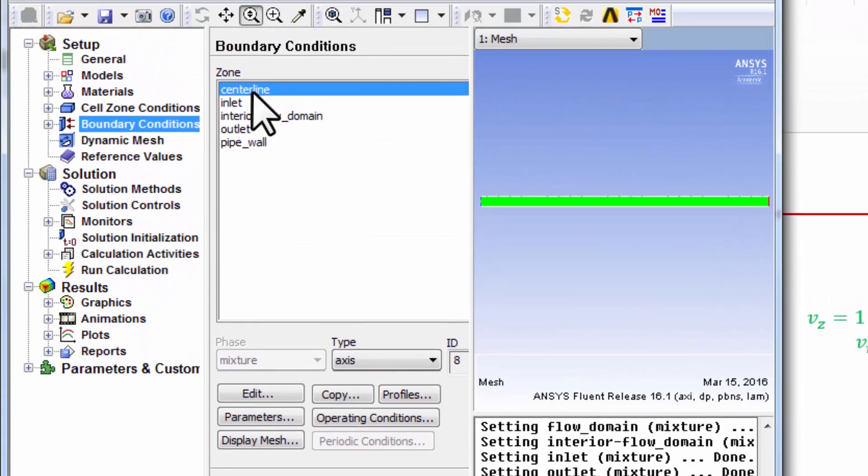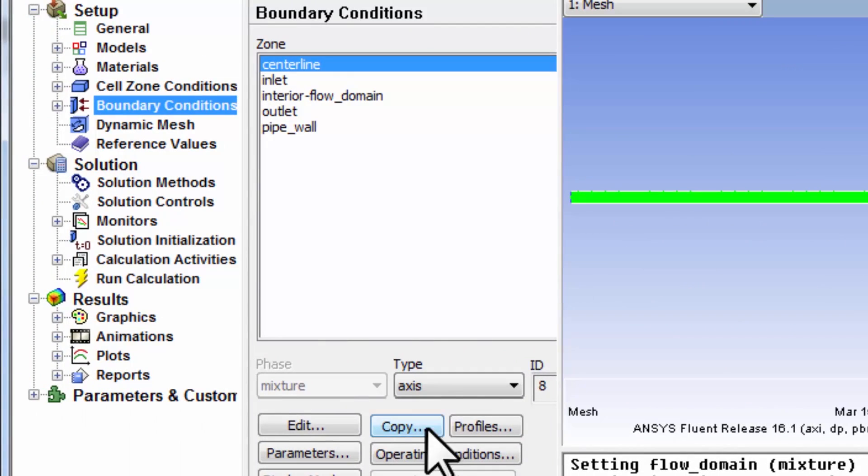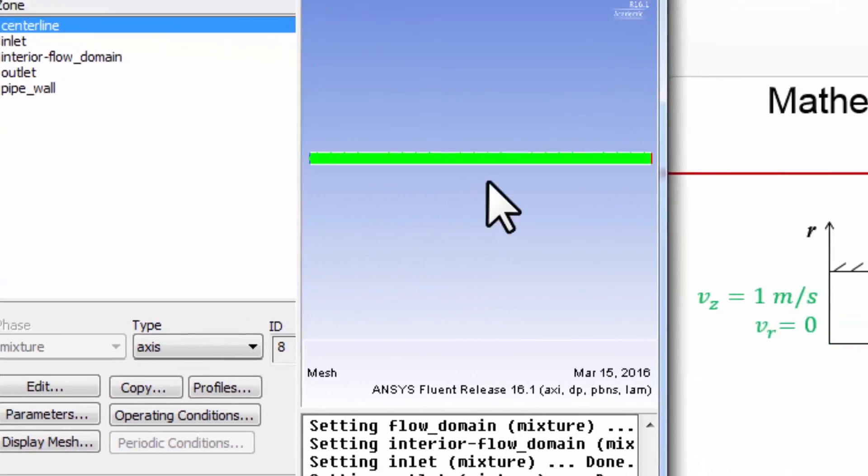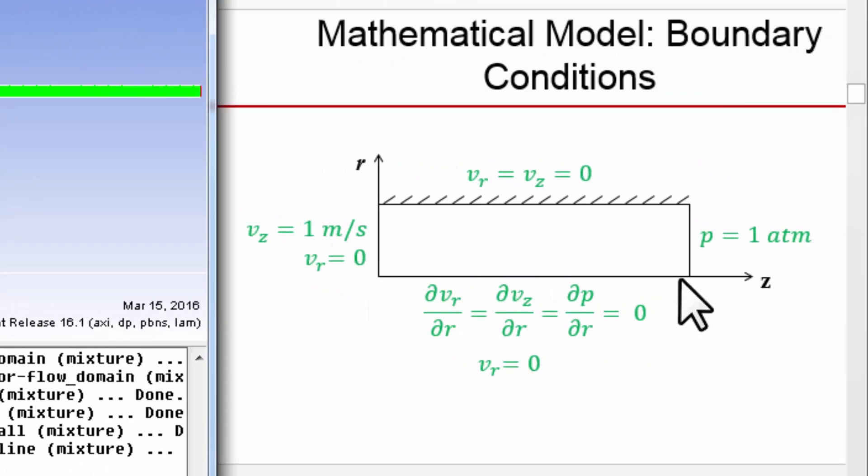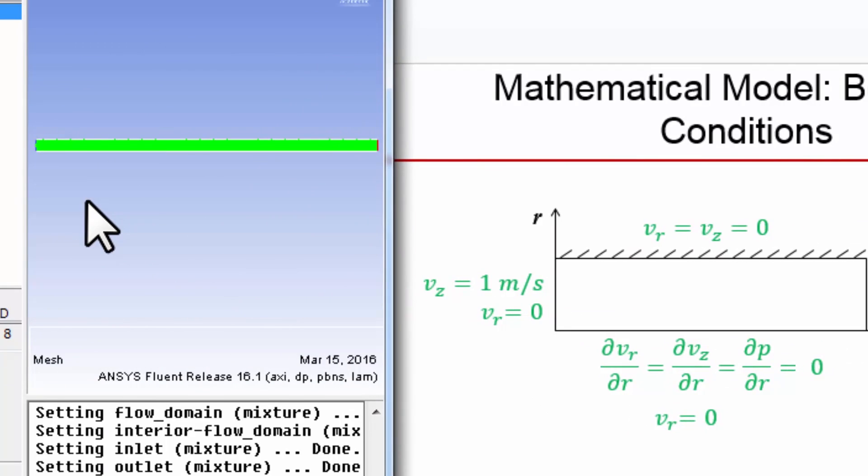One thing to keep in mind: for axis-symmetric problems, your horizontal axis is always set to the axis boundary condition. If you had a pipe that's oriented vertically, when you put it into the solver you have to make this the axis. I've seen students tripping up on that. That's because it makes the coding easier—you can have a simple switch to go between the Cartesian coordinates and the cylindrical coordinates.